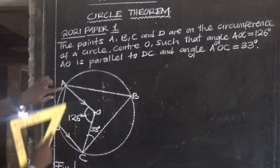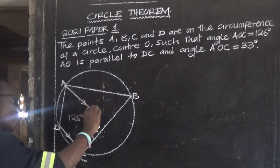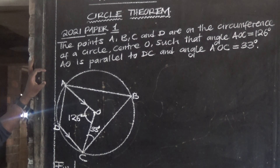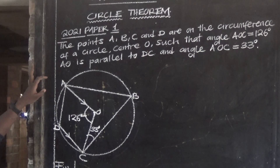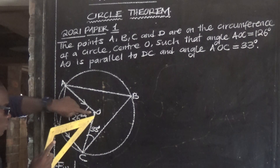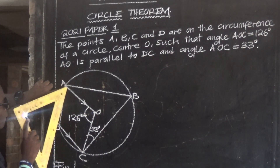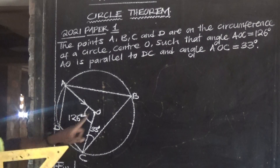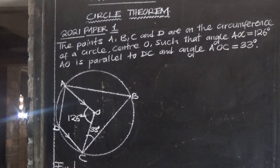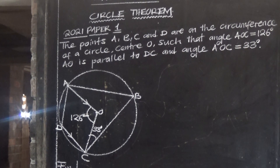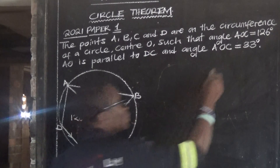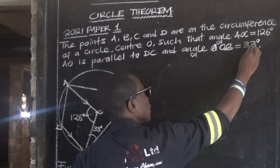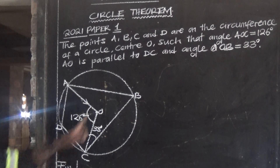Take note of these points. AO is parallel to DC — so these two lines are parallel. And angle OCB is equal to 33 degrees. So OCB, this angle, is 33 degrees.